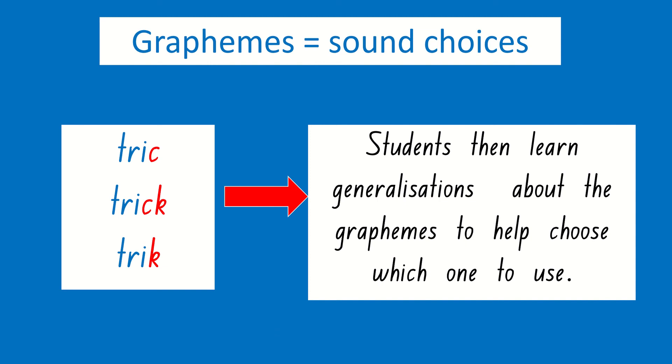Now graphemes then form the basis of our sound choices when we're spelling. You can see I have the word trick on the side and I've tried to spell it in three different ways. All of them sound right.